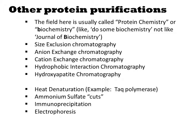There are also non-chromatography methods. For thermostable proteins you can separate them by boiling the cells. All the other proteins precipitate, leaving only the thermostable one behind. Ammonium sulfate cuts involve adding the salt to your sample, and different proteins will precipitate at different concentrations.